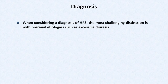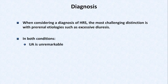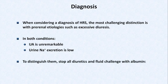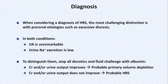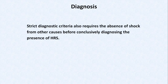When considering a diagnosis of HRS, the most challenging distinction is with excessive diuresis and other forms of intravascular volume depletion. In both conditions the urinalysis is unremarkable and urine sodium excretion is low. To distinguish them, stop all diuretics and fluid challenge the patient with albumin — if creatinine and/or urine output improves, it was probably primary volume depletion; if not, it's probably HRS. Within the pre-renal, intrarenal, and post-renal framework for AKI, HRS falls into the pre-renal category, as it is AKI secondary to a problem with hemodynamics. Strict diagnostic criteria also requires the absence of shock from other causes before conclusively diagnosing HRS.